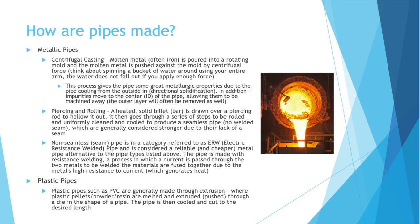You also have piercing and rolling, where a heated solid billet — a bar — is drawn over a piercing rod to hollow it out. It then goes through a series of steps to be rolled and uniformly cleaned and cooled to produce a seamless pipe. Seamless pipes are generally considered stronger than seamed pipes due to their lack of a seam. Non-seamless pipe — pipe with a seam — falls under ERW, electric resistance welded pipe, and is considered a reliable and cheaper alternative. The pipe is made with resistance welding, where a current is passed through the two metals, and due to the metal's resistance to current, heat is generated, fusing the materials.